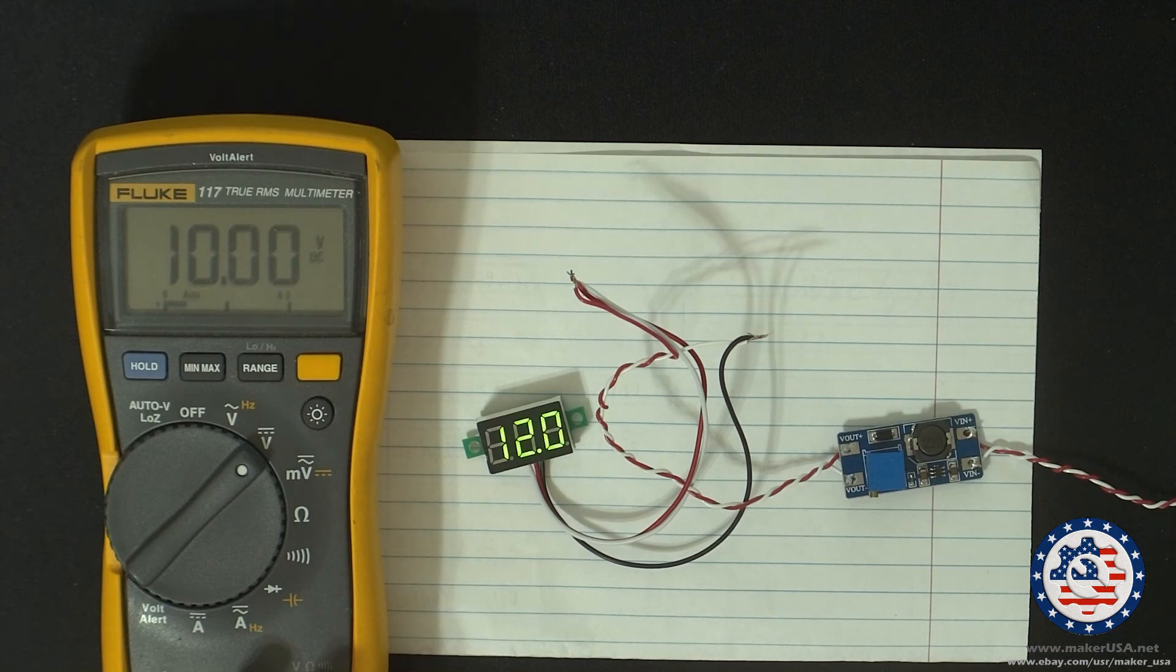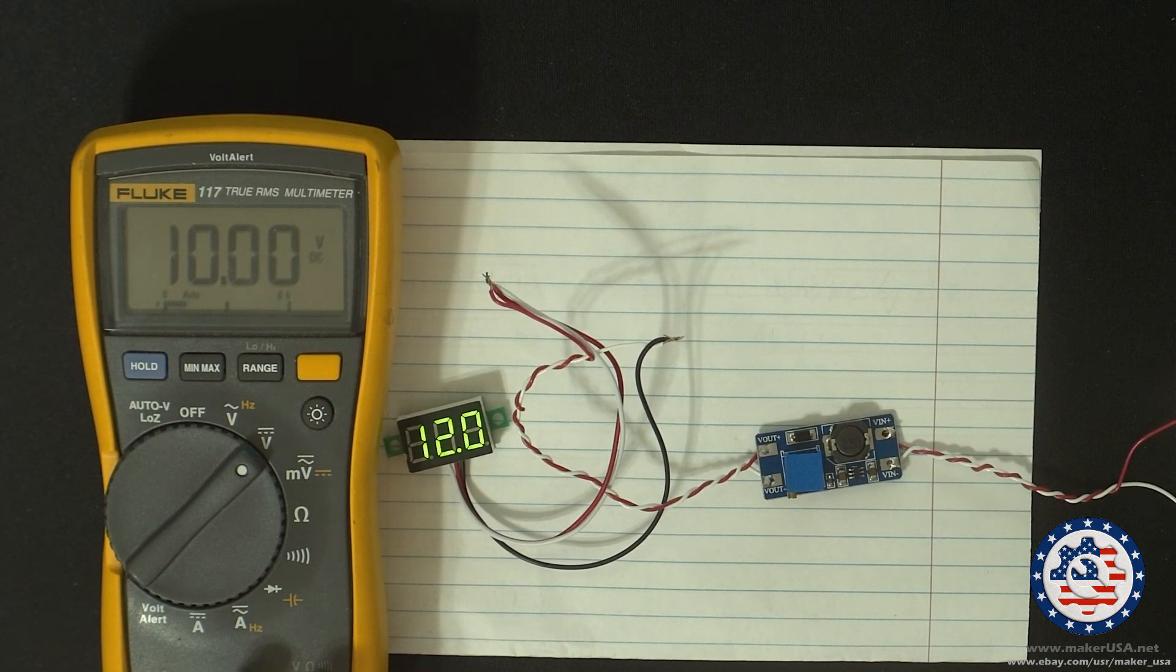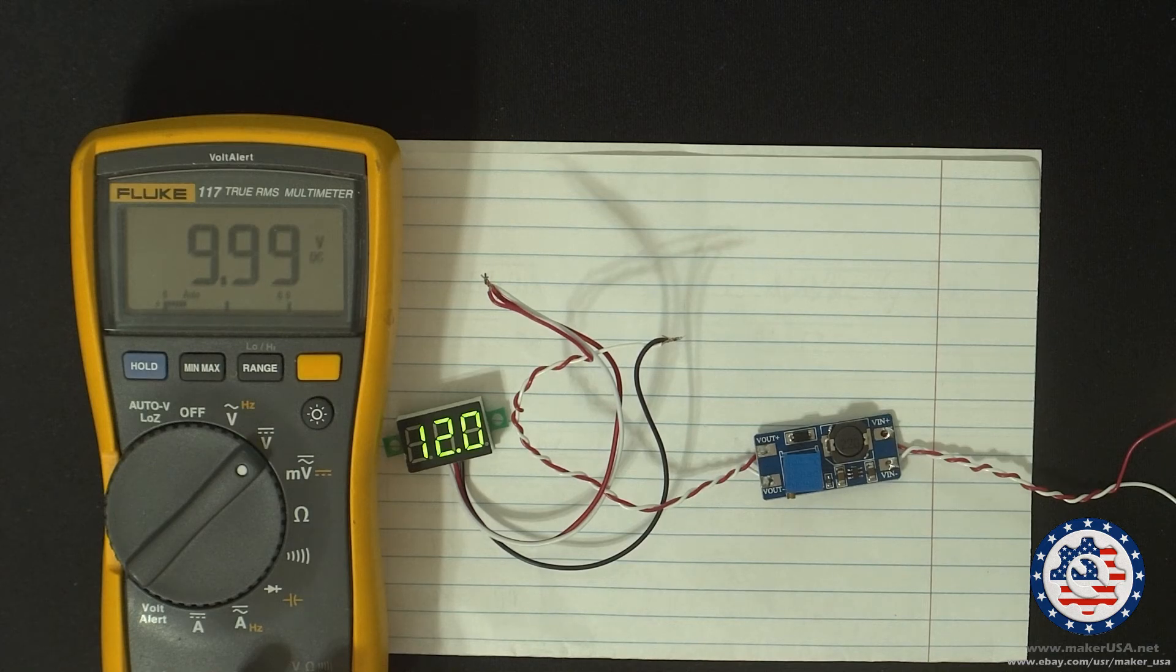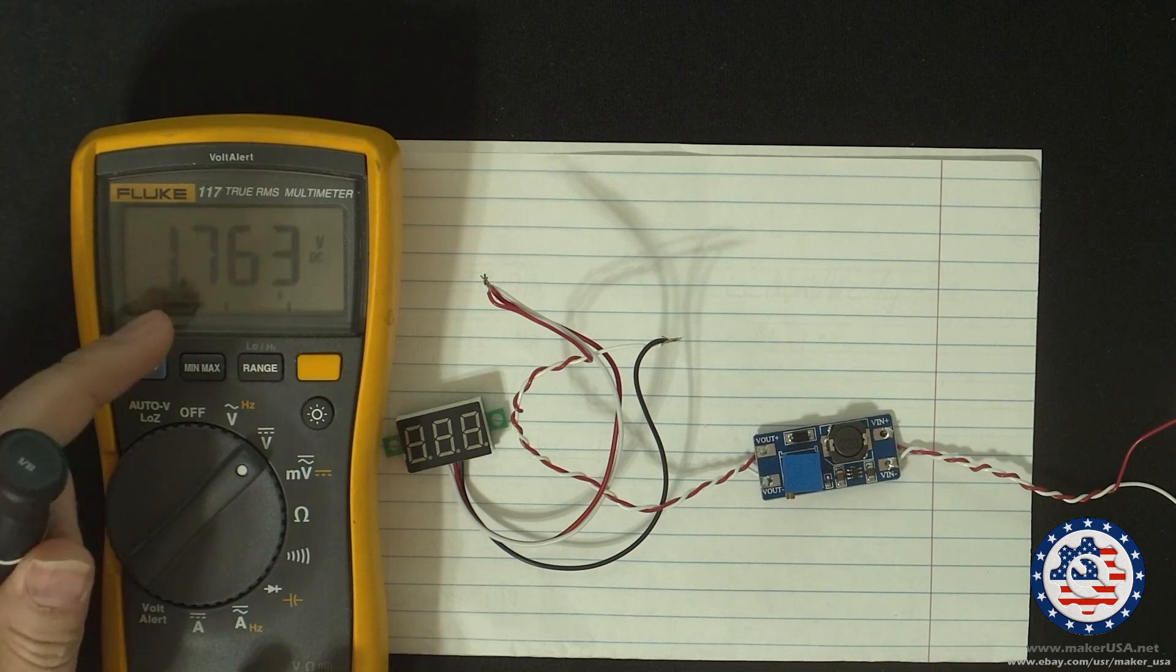So we have it back at 12 volts and now I'm going to try and reduce the input voltage. Let's drop that down too. So as you can see the input voltage is 1.75 volts.